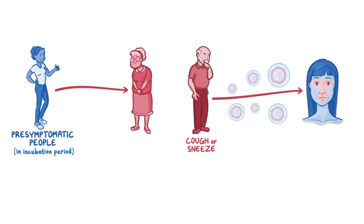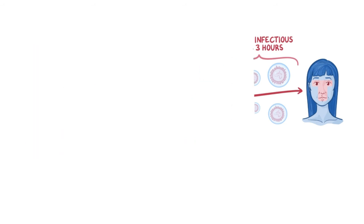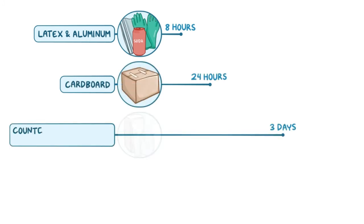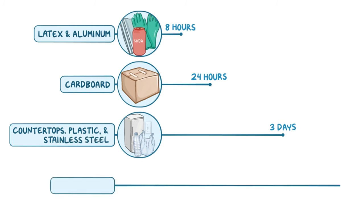Coronaviruses don't usually spread over long distances in the air, but they can get flung from one person to another on tiny droplets of saliva when someone's coughing or sneezing. Recent studies suggest that SARS-CoV-2 airborne droplets can remain infectious for up to 3 hours. In addition, the SARS-CoV-2 virus can also survive on surfaces. It can survive up to 8 hours on latex and aluminum, up to 24 hours on cardboard, up to 3 days on countertops, plastic, and stainless steel, and up to 5 days on wood and glass.